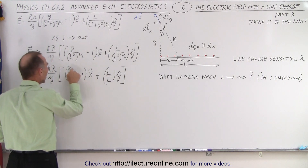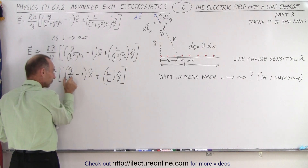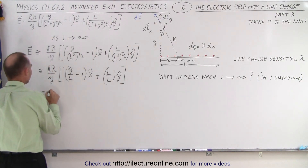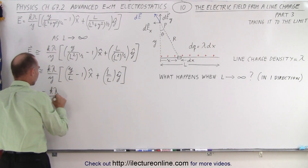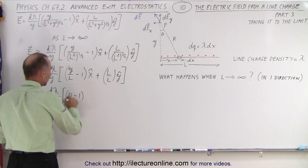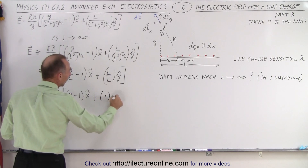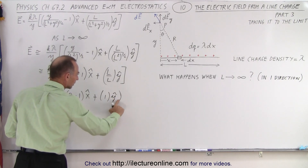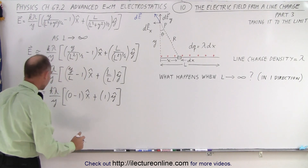And over here, Y over L — well, if L goes to infinity, not quite getting there but becoming very large — this essentially becomes zero. So now we can write this as K lambda over Y times (0 minus 1) in the X direction, plus 1 in the Y direction. That should be a bracket here — let me make that into a bracket. There we go.